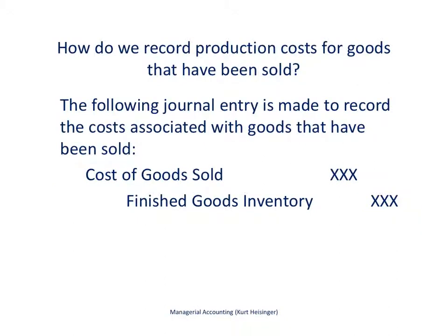Lastly, when we sell the goods, the cost of the goods sold comes out of finished goods inventory — we credit finished goods inventory — and those costs are added to cost of goods sold. That is what the journal entry looks like when we actually sell the goods. Remember, this is not the price we sell the goods for; it is the cost of the goods that we have sold. The sales price is recorded in a separate entry.